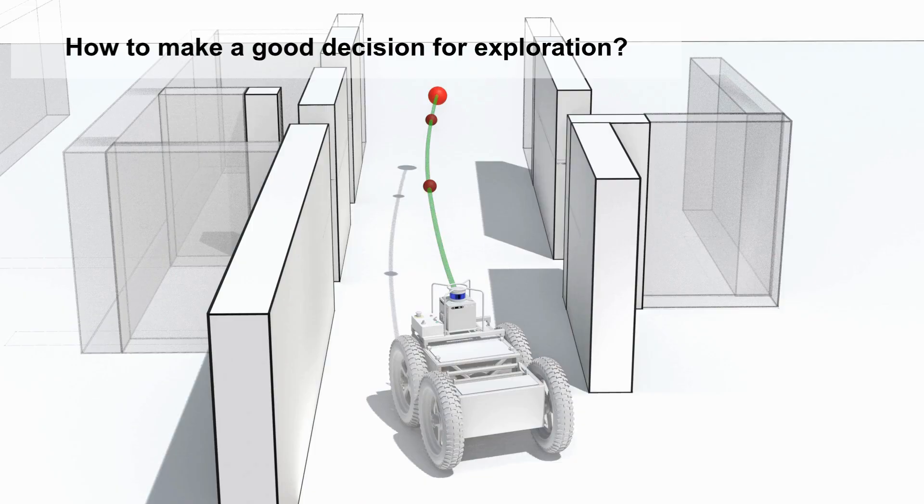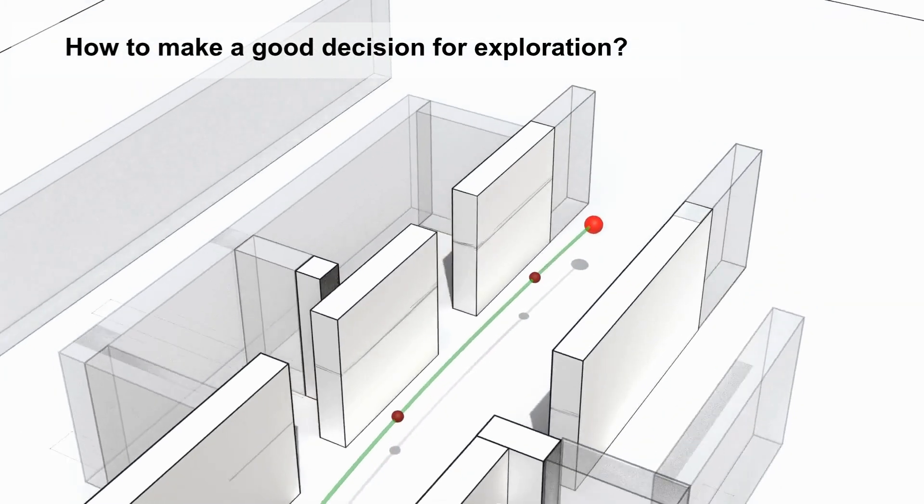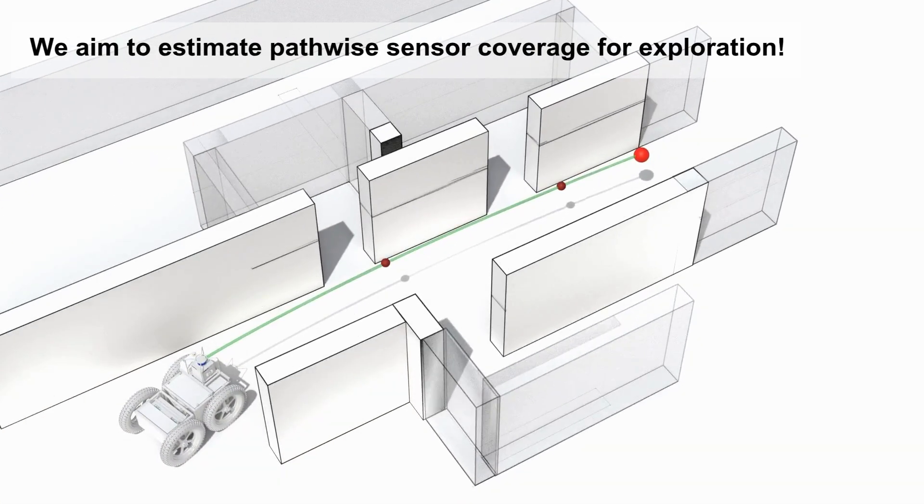How can we enable a robot to make a good decision for exploration? The key is estimating pathwise information gain.